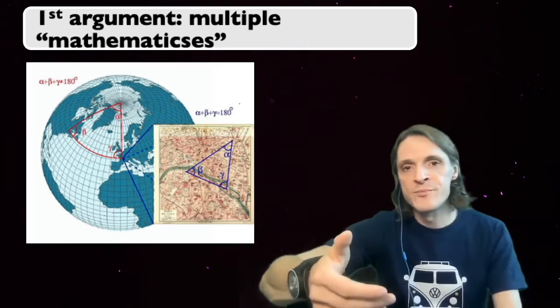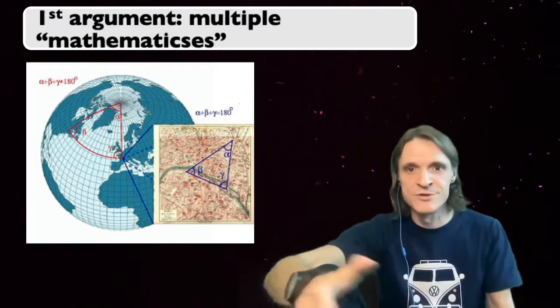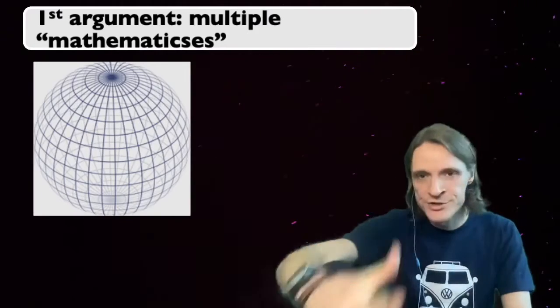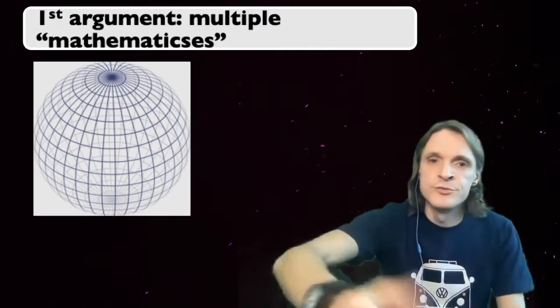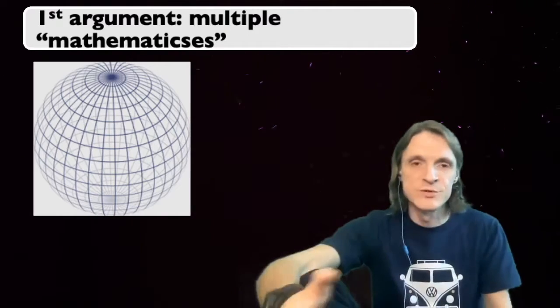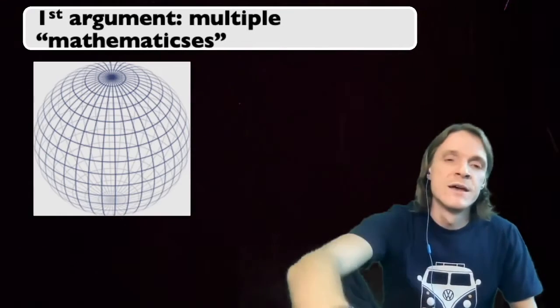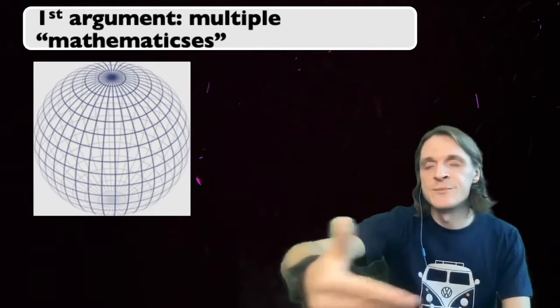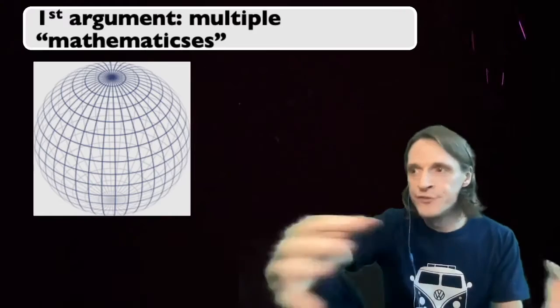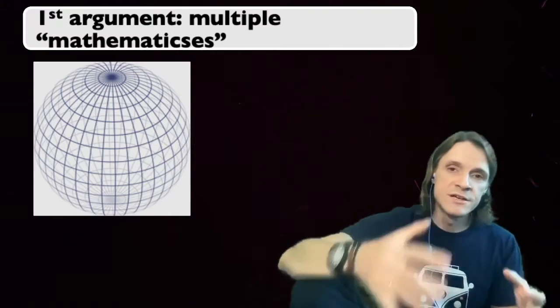Similarly, it is true that parallel lines don't intersect as long as you make the assumption of an absolutely flat surface. But once you introduce a curvature, it is no longer true. The equivalent of parallel lines on the surface of our planet would be the meridians, and they do intersect on the poles. So there is no single mathematics, but there are multiple mathematics. These are all different axiomatic systems. They're based on different sets of starting axioms.